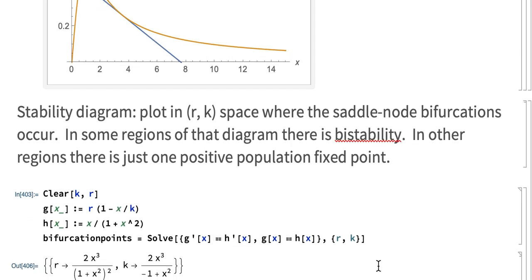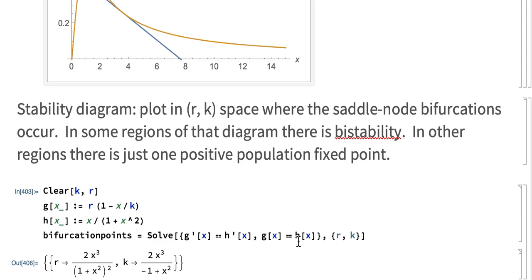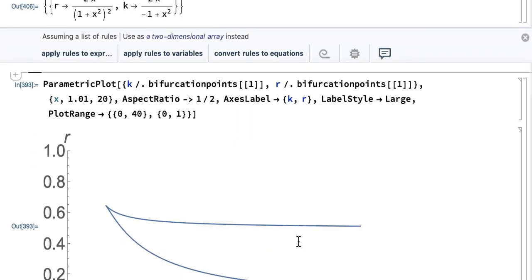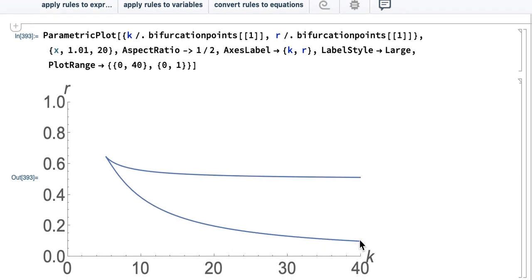And I find R and K in terms of X to make these curves. And so I'm going to plot in R K space what these curves look like. Here they are. Here's the curve of saddle node bifurcations in R K space.